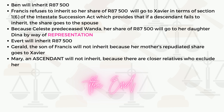Mary, as an ascendant, will not inherit because closer relatives exclude her. When looking at intestate succession, you must understand that closer relatives can exclude more remote ones, and in this case Mary is excluded by the surviving relatives.